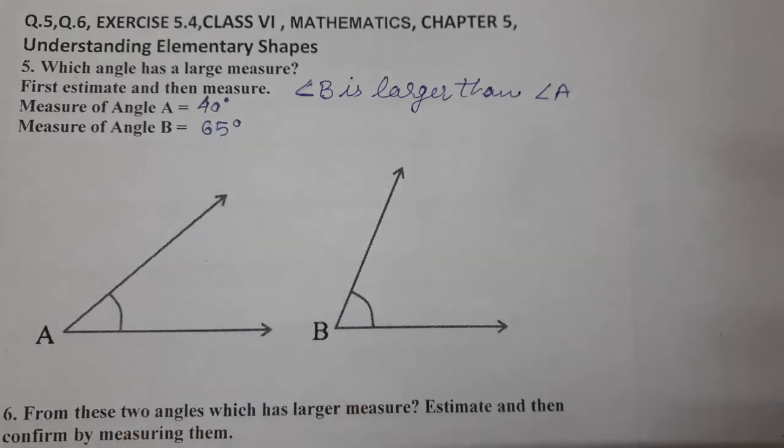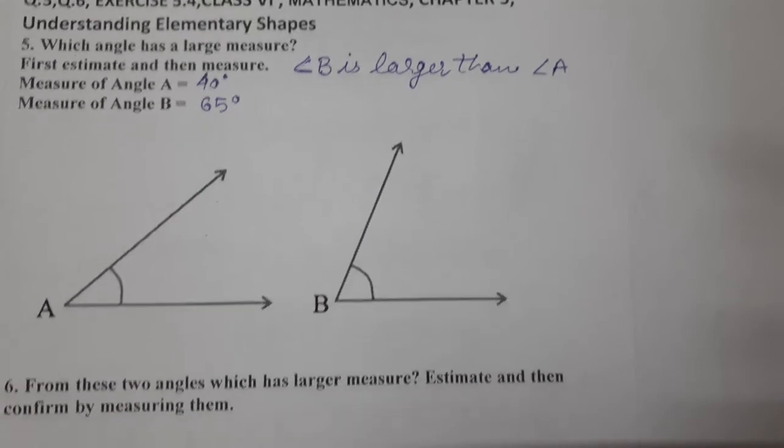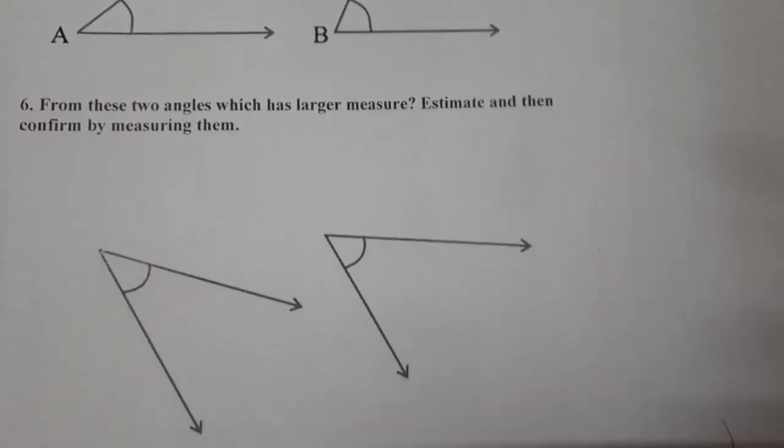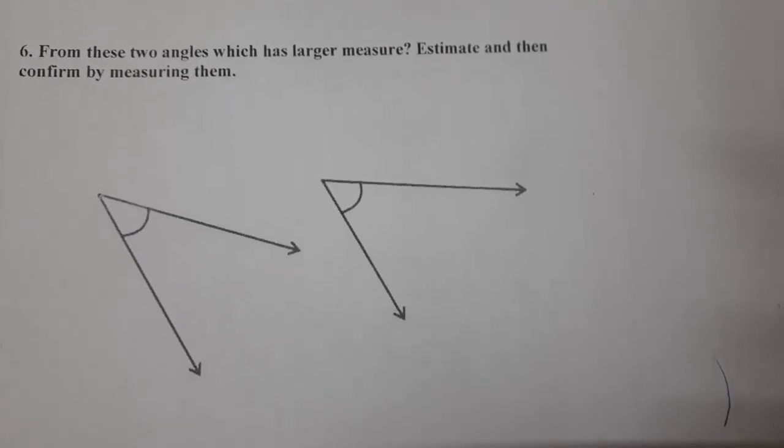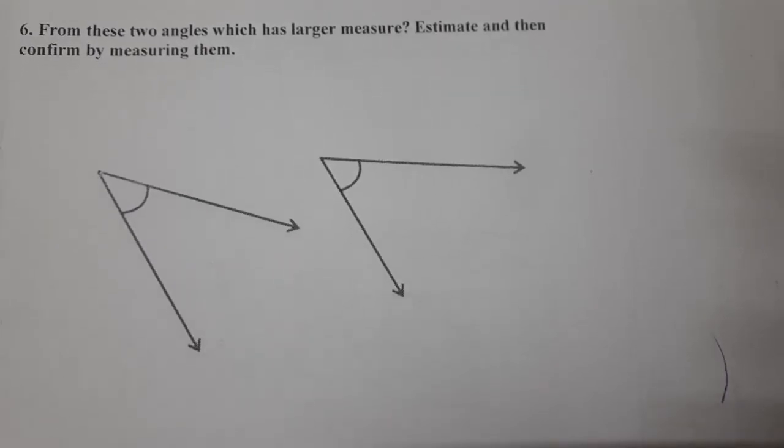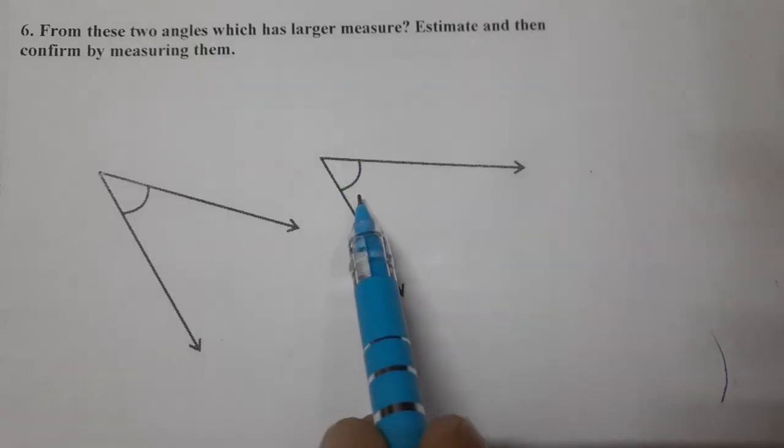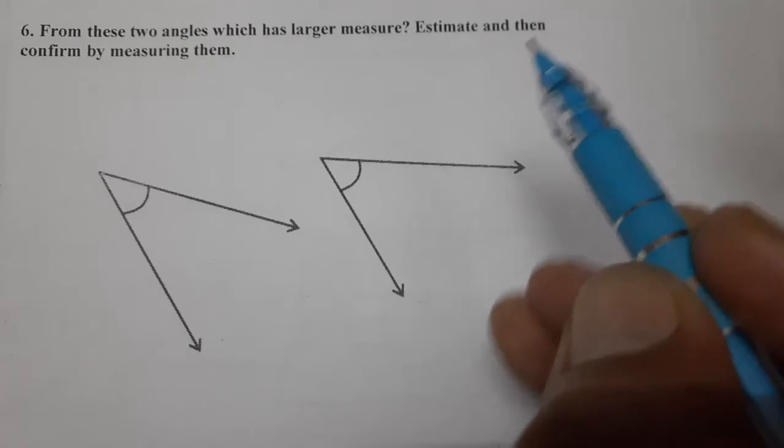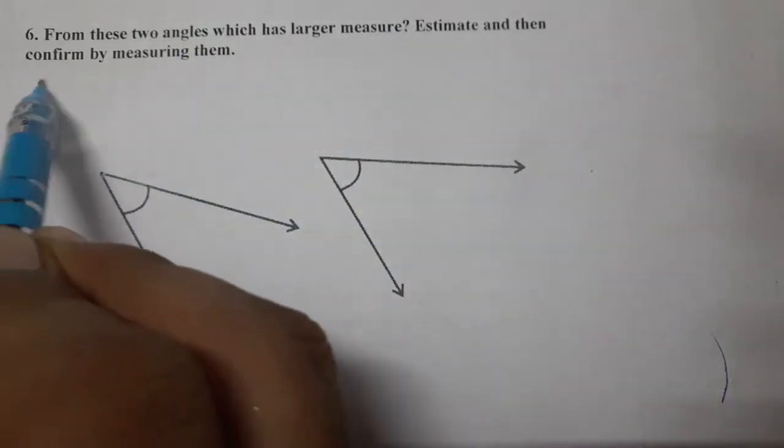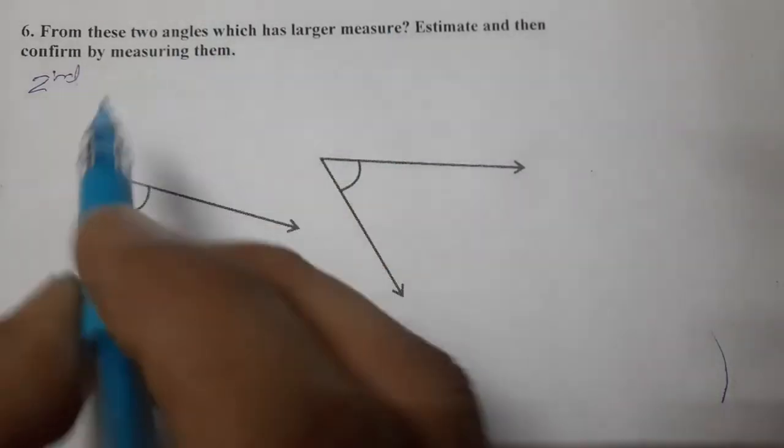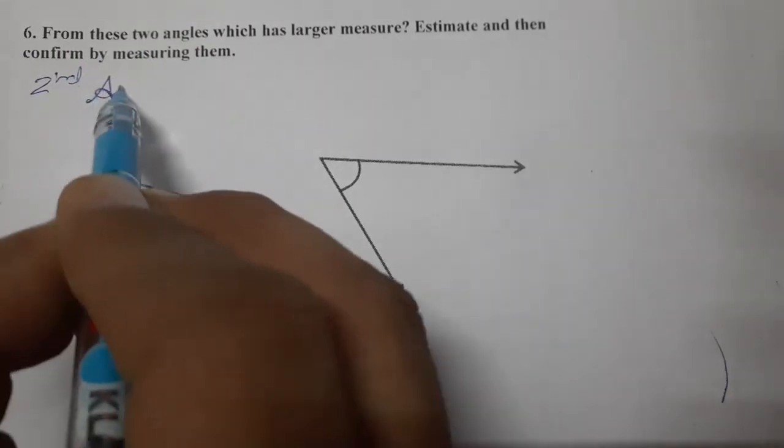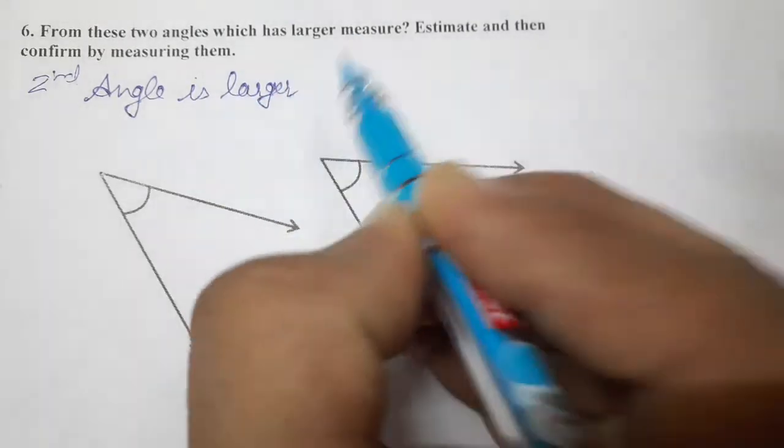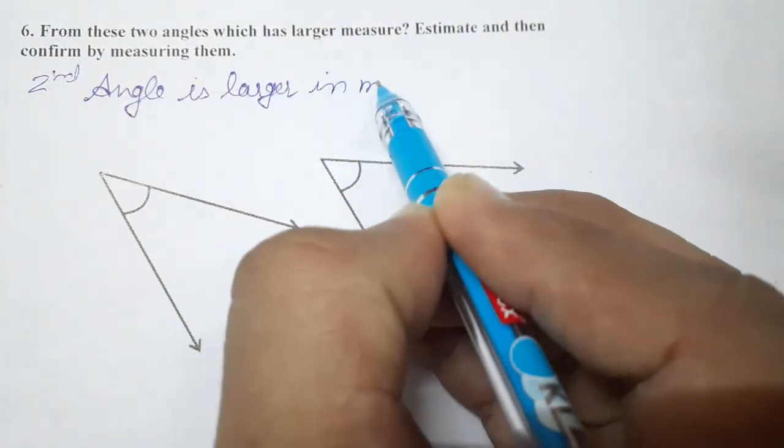Now we'll do question number six. From these two angles which has larger measure, estimate and then confirm by measuring them. So by looking we can say that the second one is greater. So we'll write: second angle is larger in measure by estimation.